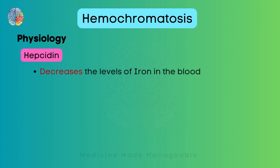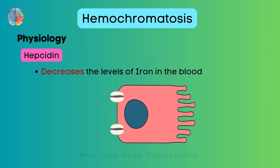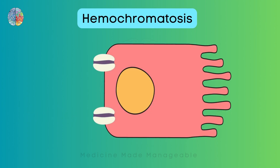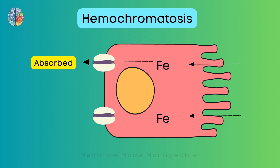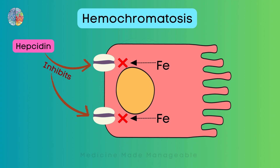Now what exactly is hepcidin? Hepcidin decreases the levels of iron in the blood. Now how exactly does it do so? This is the cell of an intestine — this side is the apical side facing the lumen of the intestine, and this is the basolateral side facing the blood vessel. After consuming iron, it enters the enterocyte and then gets absorbed through certain proteins called ferroportin. Ferroportin is responsible for absorbing the iron into the bloodstream. Hepcidin inhibits the ferroportin protein, so the iron cannot be absorbed in the presence of hepcidin, and the levels of iron decrease in the body.